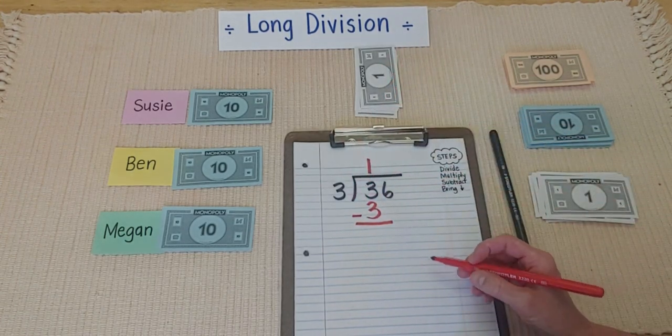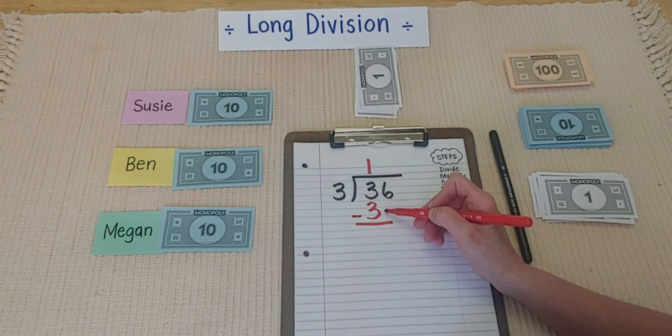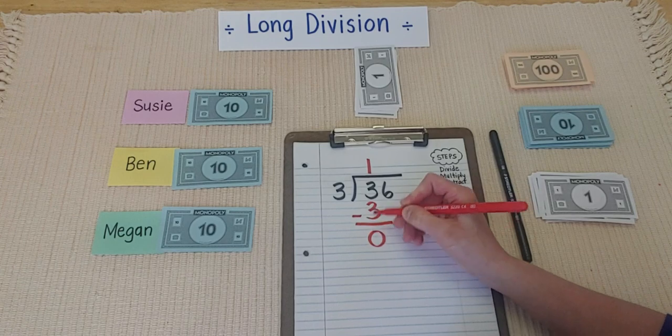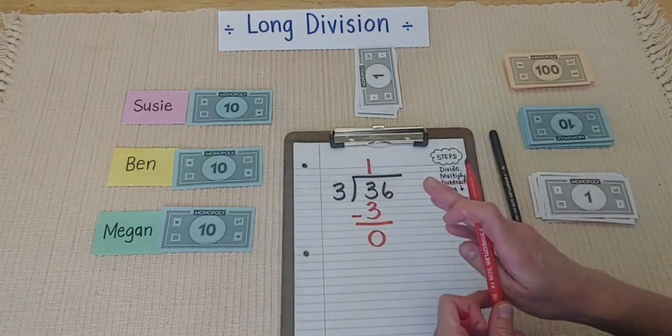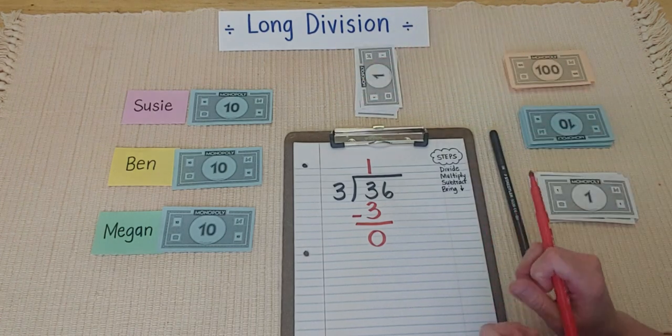So, now the next step is subtract. I used three 10s. So, three 10s take away three 10s is zero 10s. I have no 10s left. And I can even look up here to check. No 10s left. I used them all up.